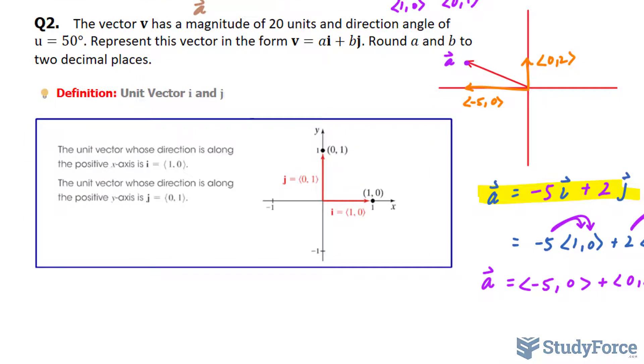Let's apply what we learned to question 2 as well. The vector v has a magnitude of 20 units and a direction angle of θ = 50°. Represent this vector in the form v = ai + bj, round a and b to two decimal places.